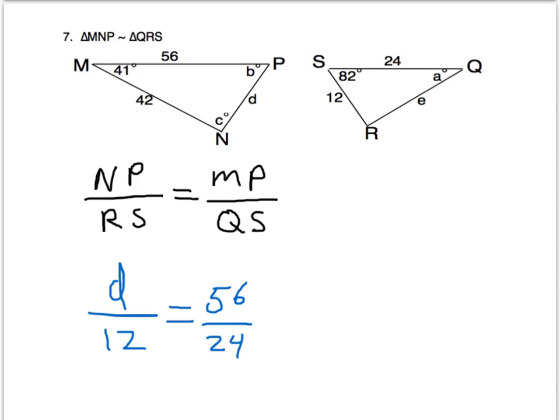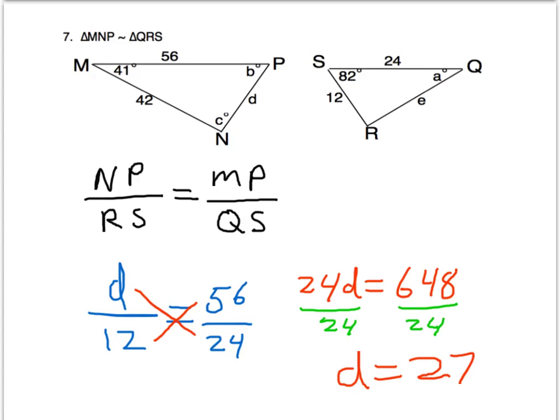And so now we can solve for D by cross-multiplying. D times 24 is equal to 12 times 56, which is 648. And then we can solve for D. Divide by 24 on both sides, and we get that D is equal to 27. So now we've found D.